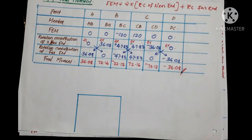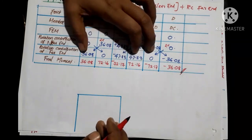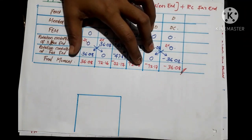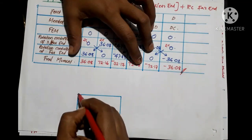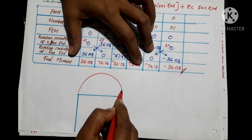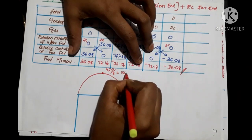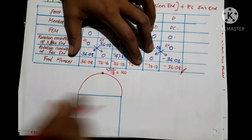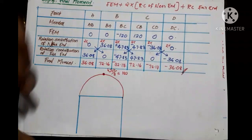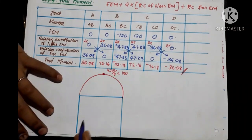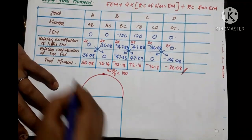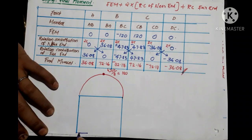Any method you use gives the same answer. This is the final bending moment diagram. We use a uniformly distributed load, and the maximum bending moment equation is wl²/8, which gives a maximum value of 190 kNm. The final bending moment at the members is 36.08 kNm, and we mark these final values on the diagram.